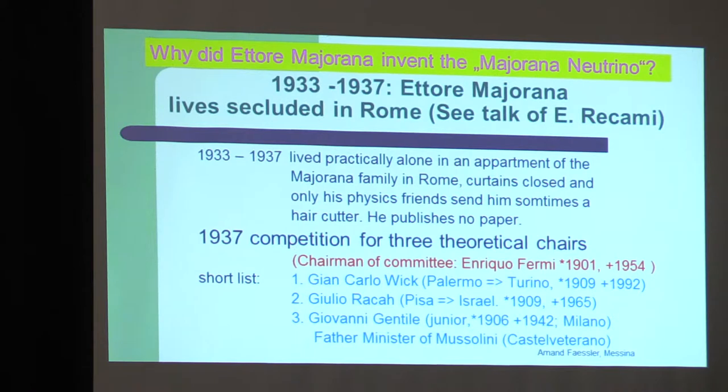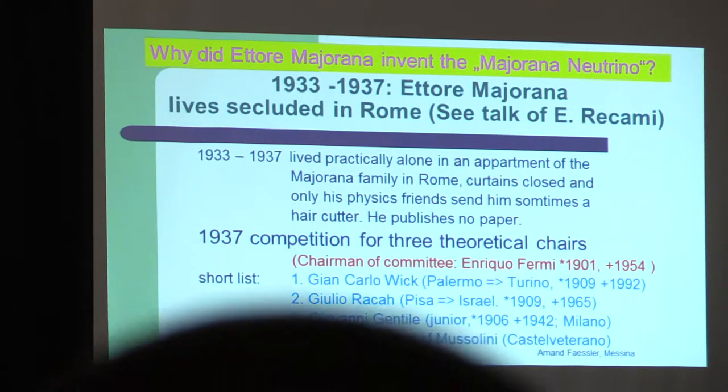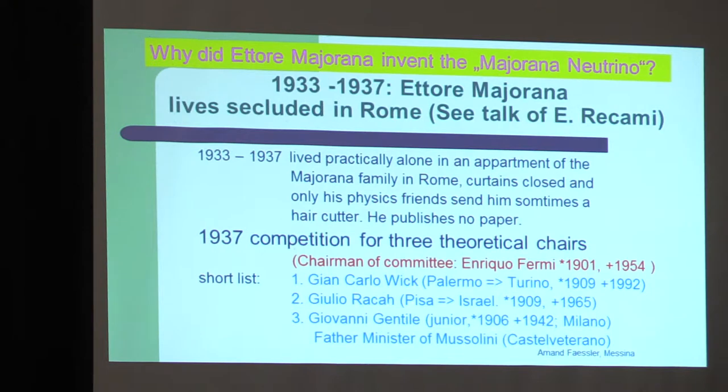The neutrino came back in August 1933 from a stay in Leipzig with Heisenberg. And he lived virtually up to 1937 in an apartment of the Majorana family in Rome. But then came, in 1937, three new chairs. Enrico Fermi called the chairs for the New Testament. The New Testament was, in his language, quantum mechanics. Giancarlo Wick got a chair in Palermo, then moved to Turin. Giulio Racah in Pisa moved in 1939 to Israel. And Giovanni Gentile moved immediately to Milan.